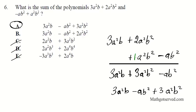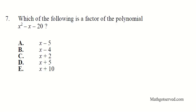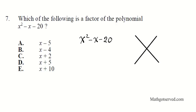Let's move along to question 7. Which of the following is a factor of x squared minus x minus 20? I'm going to use the AC method to factor this. We have a equals 1, b equals negative 1, and c equals negative 20. So AC equals 1 times negative 20, which is negative 20, and b equals negative 1.